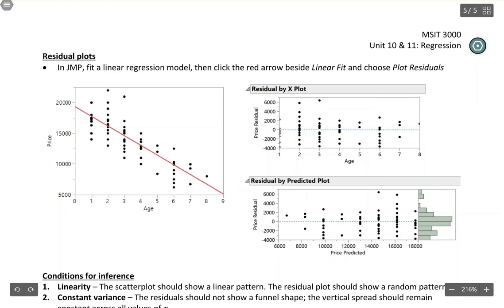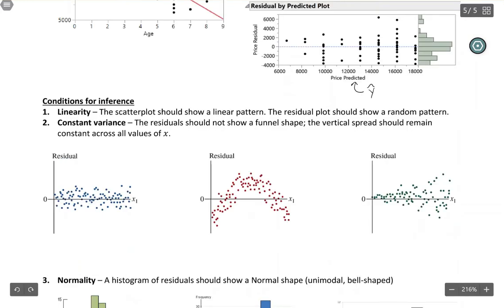So the residual by predicted plot, this is very similar, except that instead of using the explanatory variable on the x-axis, you're using the y-hat values on the axis, but it's not really a big deal because you're going to read these two plots the same way. So let's look at how you use this to check the conditions.